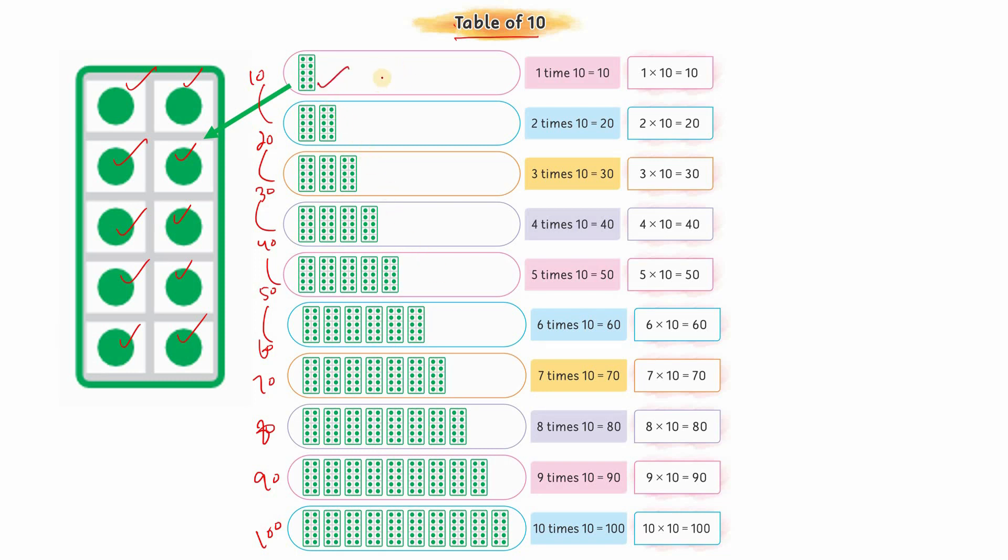One bundle has how many objects? 10 objects. So in two bundles how many will there be? Ten plus ten means twenty, as written here. How many bundles are here? Three. So that means ten plus ten plus ten - repeated addition. When there are four, it means ten plus ten plus ten plus ten, which means we add them four times.